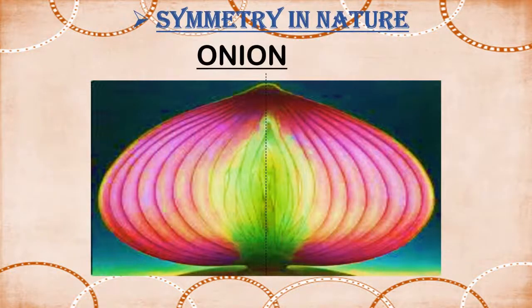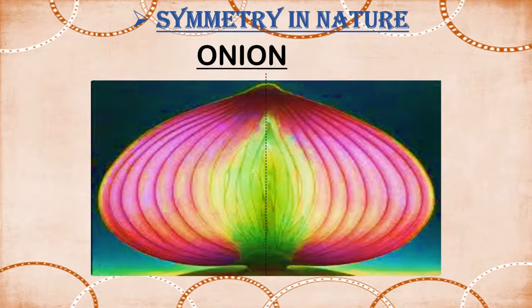Children, we see symmetry in nature also. What do you see in the picture? Yes, this is a picture of onion which we use in cooking. Look at the dotted line. The fold along the dotted line in the onion divides it into two parts which fall exactly on one another. So, onion is symmetrical with respect to this line.